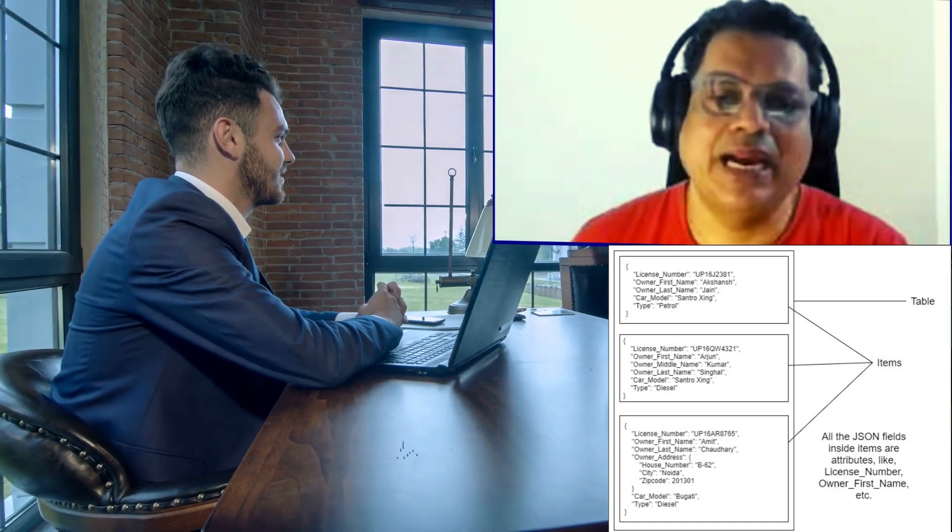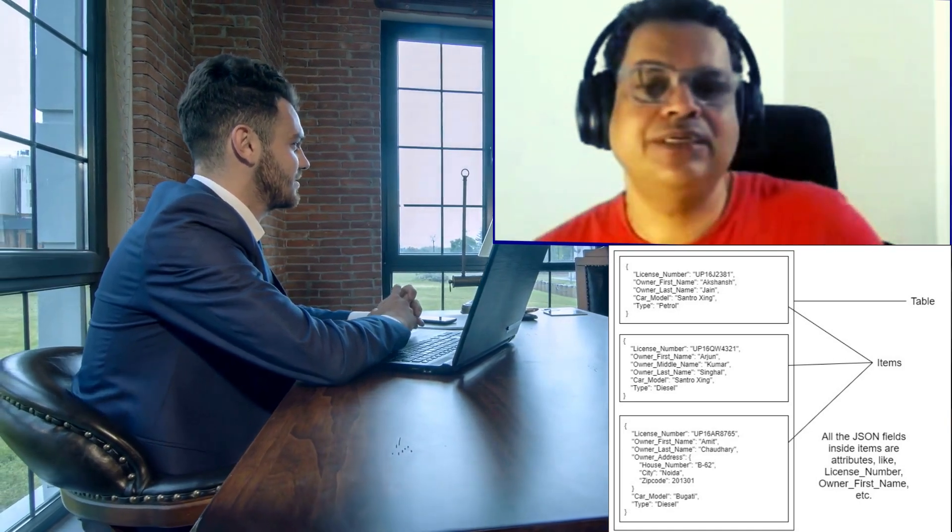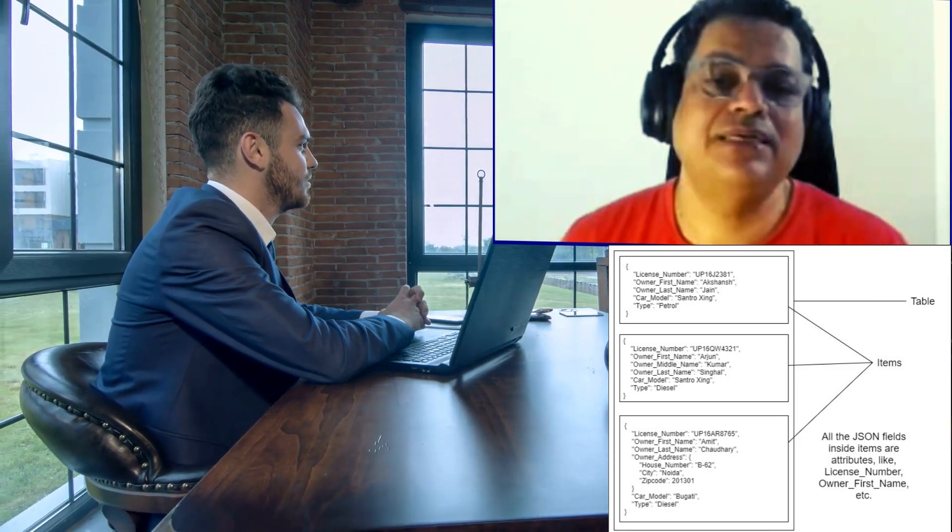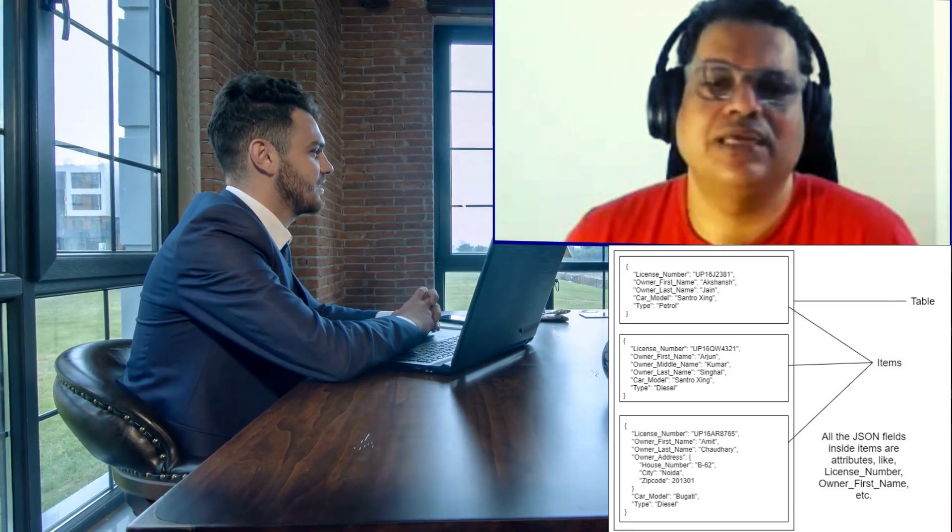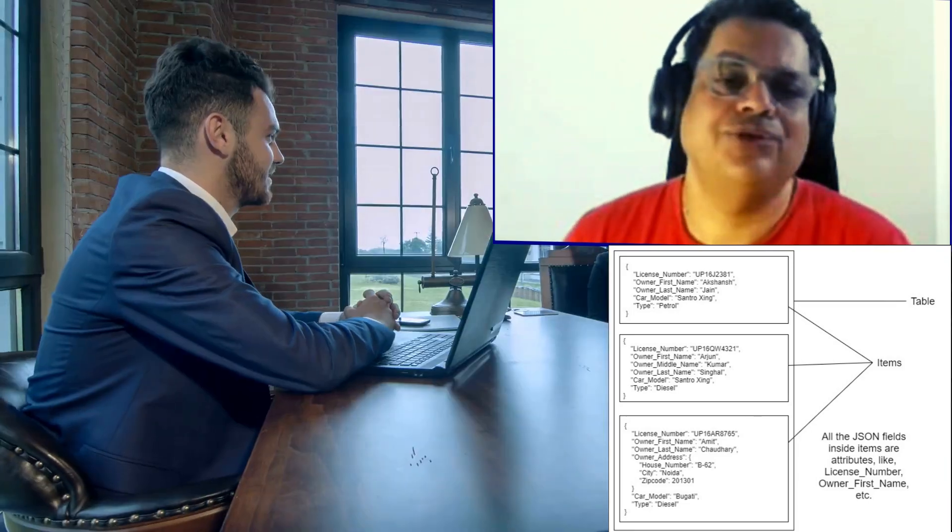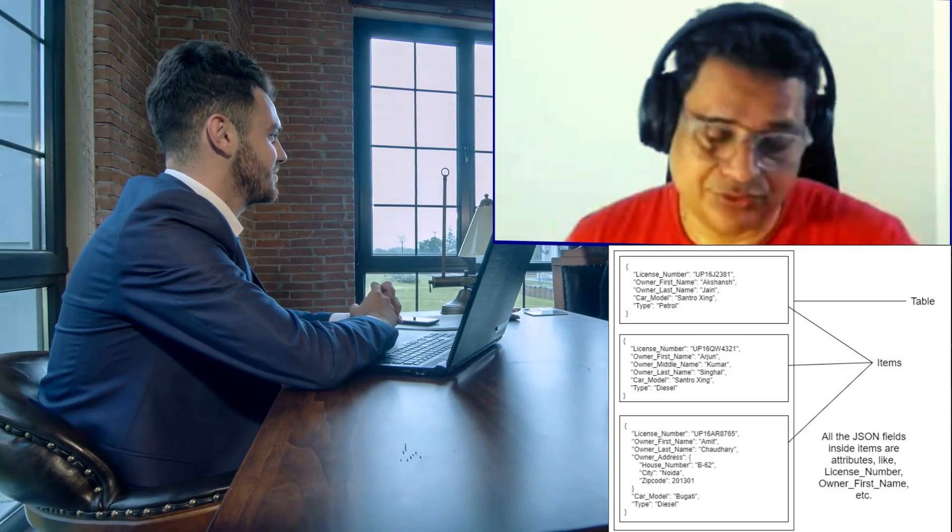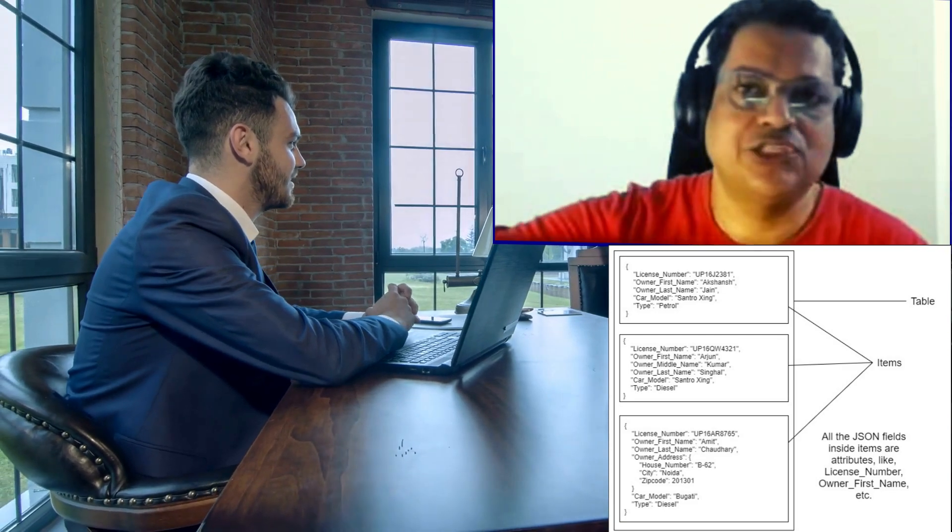In SQL we have columns. Here we have attributes. Attributes in DynamoDB are similar to columns in a relational database. They represent the data elements that you associate with each item, such as name or address. An item can have one or more attributes.